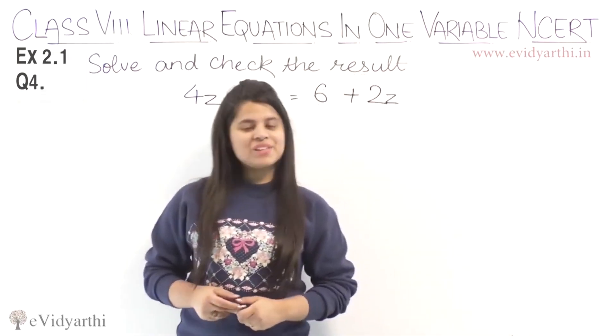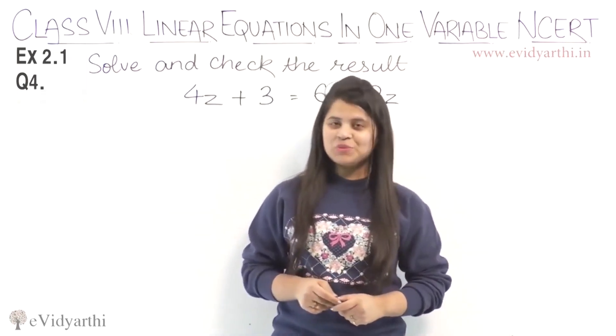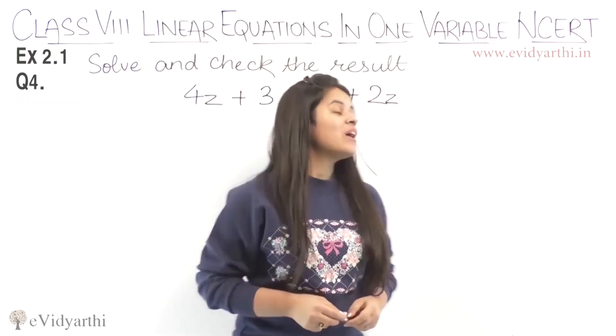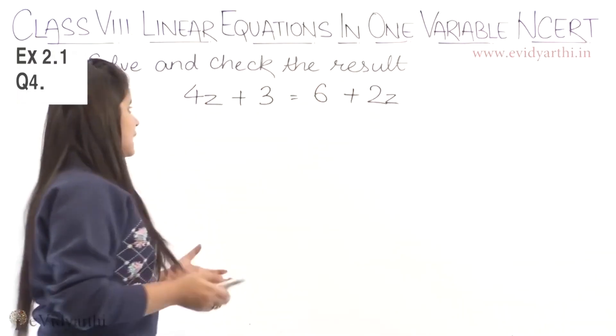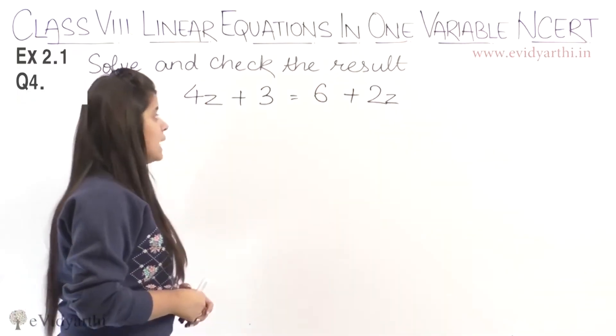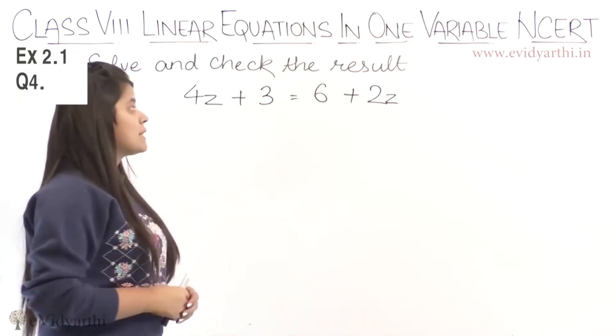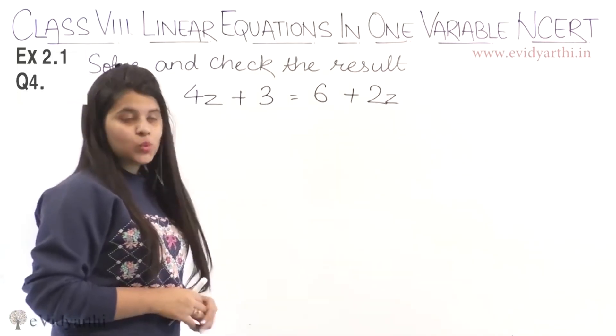Hi everyone, this is Swansi from Evangyathic Tots and coming to question number 4, exercise 2.1. So in this question, again we have to solve and check the result. The equation is 4z plus 3 equals to 6 plus 2z.